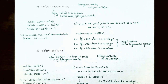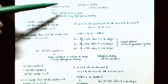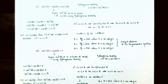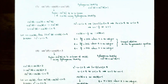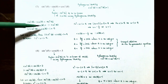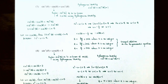Number 3: solve sine squared theta minus sine theta equals cosine squared theta. Again, two different trig functions are involved. Since the only linear term is sine of theta (first power), we replace cosine squared theta using the Pythagorean identity: cosine squared theta equals 1 minus sine squared theta. The right side becomes 1 minus sine squared theta, while the left side stays as sine squared theta minus sine theta.